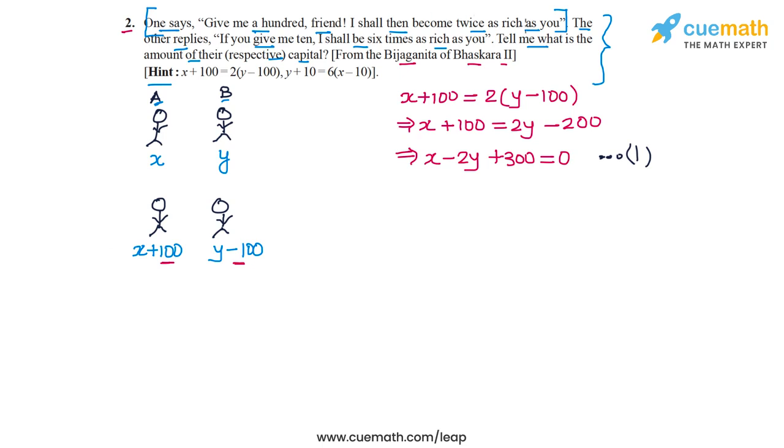Now, the second part of the problem statement is when the second friend says, if you give me 10, I shall be six times as rich as you. So in this case, B is saying, give me 10 rupees and I will be six times as rich as you. If A gives 10 rupees to B, A's capital will go down by 10 rupees and B's capital will go up by 10 rupees. Now B will be six times as rich as A. So Y plus 10 will be six times of X minus 10. This gives us our second equation in X and Y.